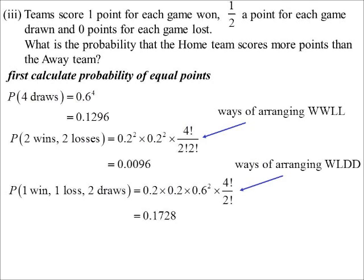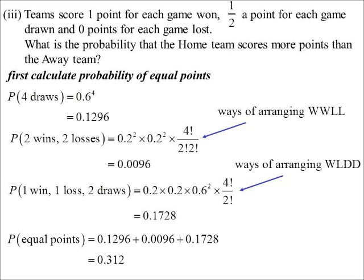We could have two draws and a win and a loss. Two draws, a win and a loss. So if I have two draws, a win and a loss, 0.2, 0.2, the two draws will be 0.6 squared. But again, there are different ways that this could happen. So W, L and two D's. So 4 factorial divided by 2 factorial, 0.1728. And I think that's it. I don't think there's any other way they could get equal points.